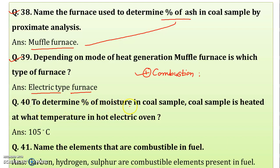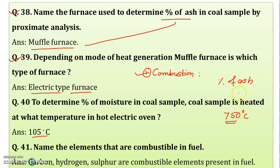To determine the percentage of moisture in a coal sample, the coal sample is heated at 105°C in a hot electric oven. For determination of percentage of ash in the muffle furnace, you have to heat up to 750°C. So: 105°C for moisture in a hot electric oven, and 750°C for ash in the muffle furnace.